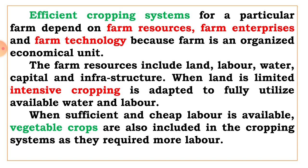Efficient cropping system means the cropping system which gives maximum profit and maximum utilization of available resources. The efficient cropping system for a particular farm depends on farm resources, farm enterprises, and farm technology, because a farm is an organized economical unit. It depends on available resources like solar energy, land, labor, water, and farm enterprises like dairy, fishery, poultry, bakery.